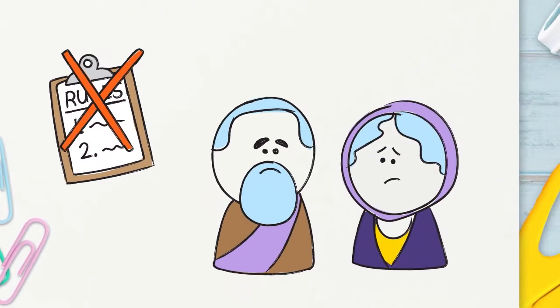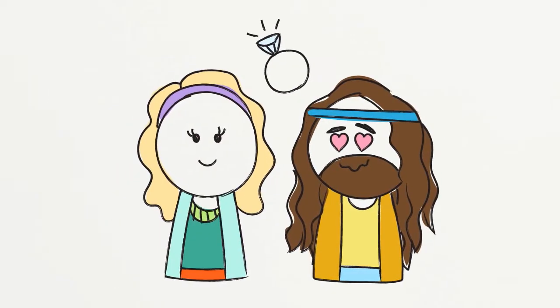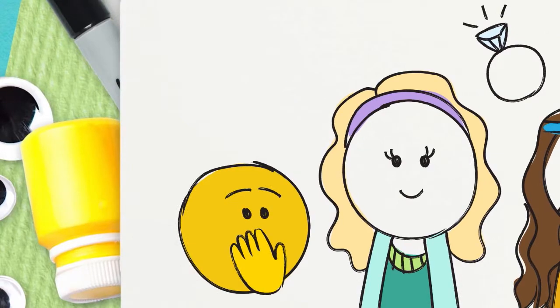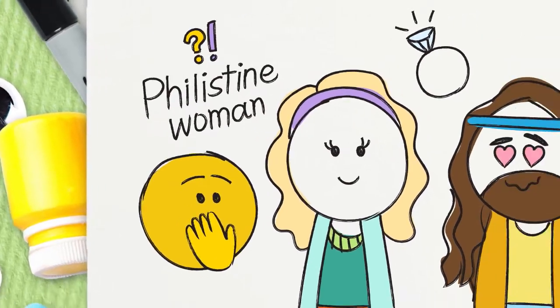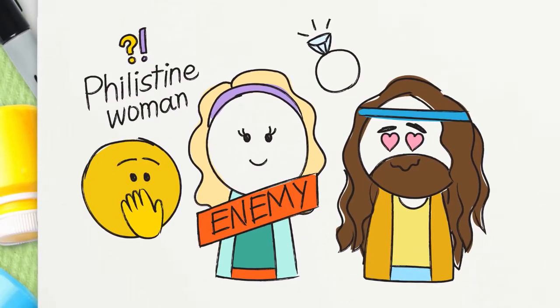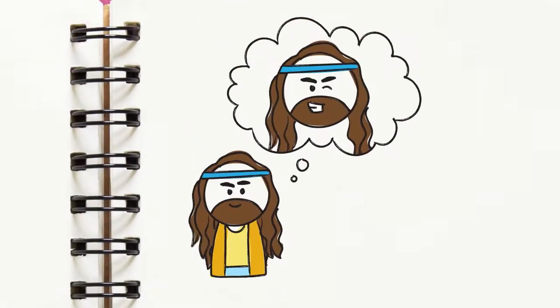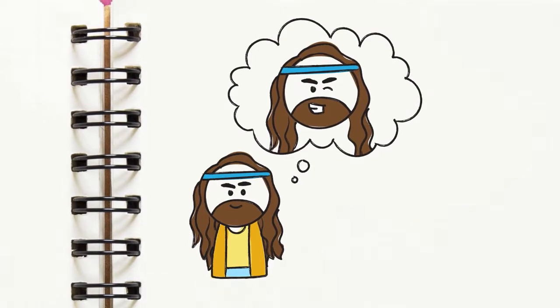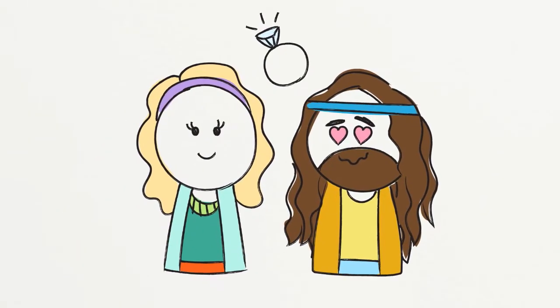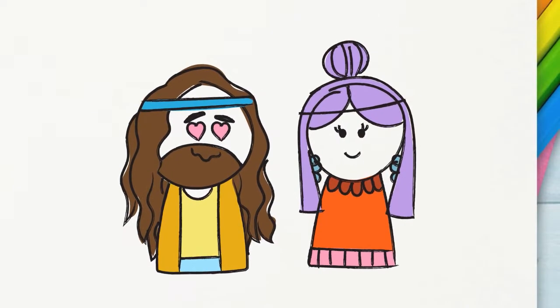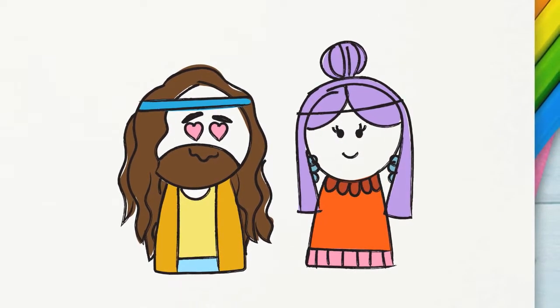But he kept breaking the rules God had given him, and he didn't care about pleasing his parents either. It all started with Samson wanting to marry a Philistine woman. Wait, a Philistine woman? He wanted to marry the enemy? Exactly! His parents tried to tell him that this wouldn't please God, but all Samson cared about doing was what he wanted to do, so he married her anyways. Over the years, Samson fell in love with not one but two Philistine women, and one of them was named Delilah.